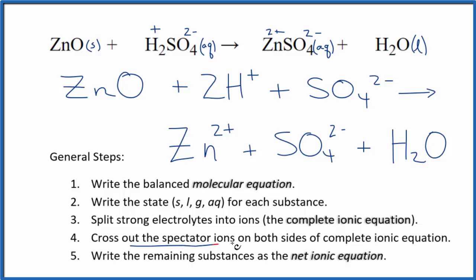Now we can cross out spectator ions. They're on both sides of the complete ionic equation. They haven't changed, so we're not interested in them. We have in the reactants, we have this sulfate ion here. And here in the products, we have the sulfate ion. So that's a spectator ion, and we're going to cross that out.